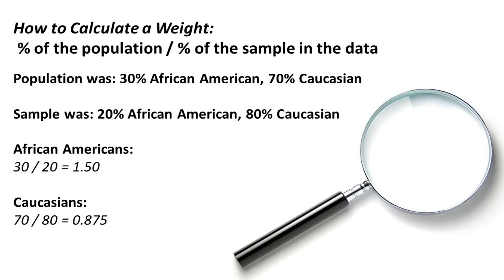I need to figure out how to weight these differently in the analysis. The formula is simple: take the percentage of the known population and divide it by the percentage of the actual sample. For African-Americans, the population is 30% but the sample was 20%, so 30 divided by 20 gives a weight of 1.5 — increasing that group's weight. For Caucasians, the population is 70% but the sample was 80%, so 70 divided by 80 gives 0.875 — weakening those responses to balance things out.